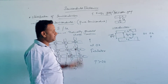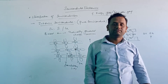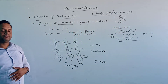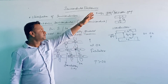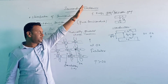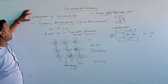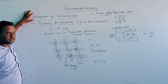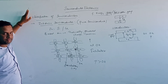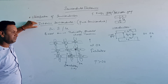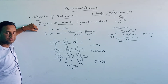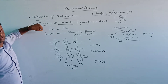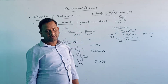So that is all about the intrinsic semiconductor. In the next class we will discuss extrinsic semiconductors. Today we discussed the classification of solids based on energy gap and forbidden gap, and the classification of semiconductors into intrinsic and extrinsic types. Thank you.